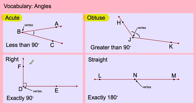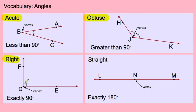Next is a right angle. In a right angle you'll see this little square inside the angle, and that tells you that it is a perfect right angle. A right angle is exactly 90 degrees, and the vertex is right where the two rays come out of.